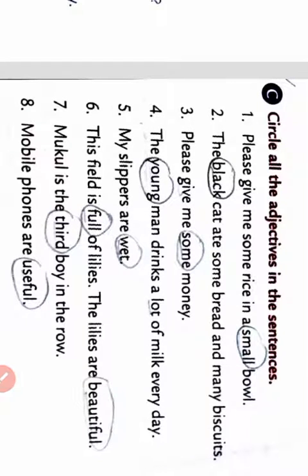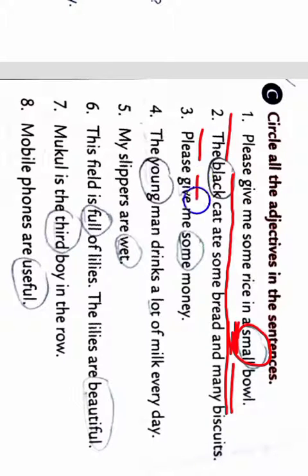Let's see question number C. Circle all the adjectives in the sentence. We have to circle all the adjectives in the sentence. So question number 1 is: Please give me some rice in a small bowl. So the bowl is small. Small is our adjective. Then 2: The black cat ate some bread and many biscuits. So adjective is black.